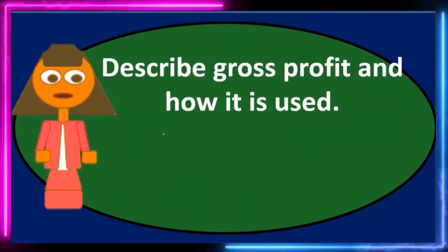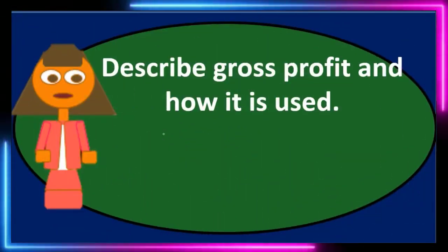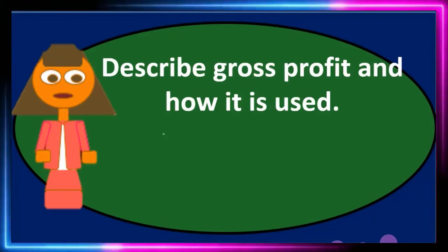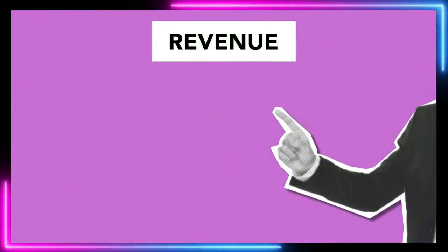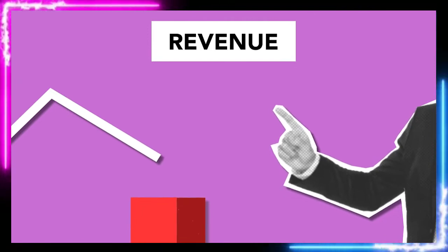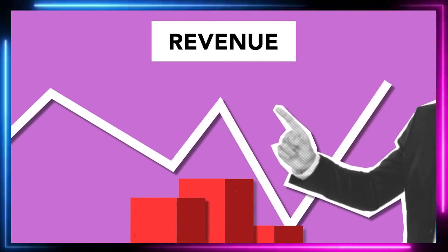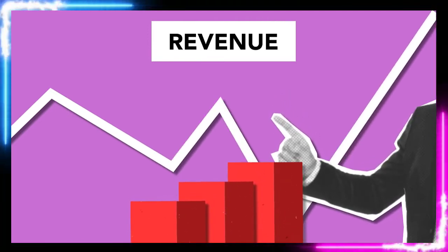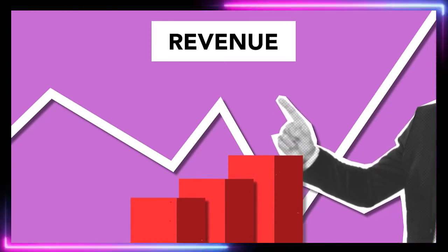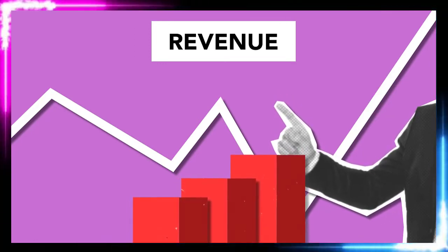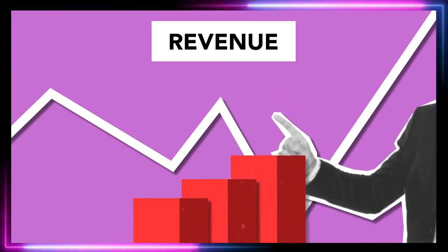We can also compute a gross profit ratio by dividing gross profit by sales. This shows us, on a percentage basis, how much we keep from each dollar of sales in terms of gross profit. This is often a very useful number when analyzing a company that sells inventory.